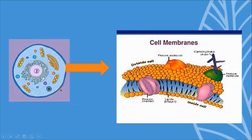This is the outermost boundary of the cell, called plasma membrane or cell membrane. Cell membrane is the structure shown in this diagram, where you can see the cell membrane.